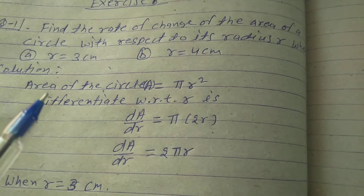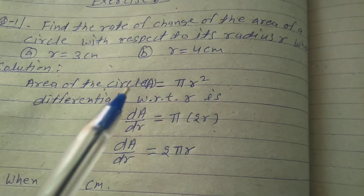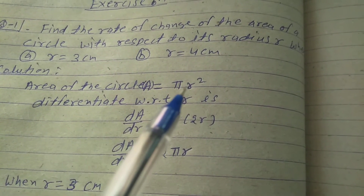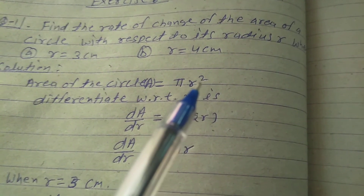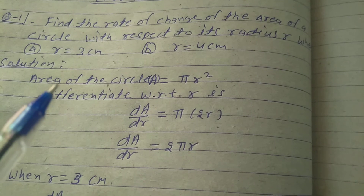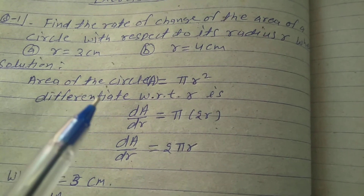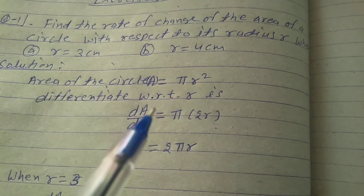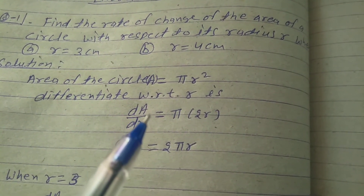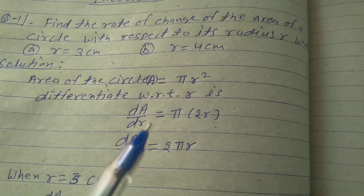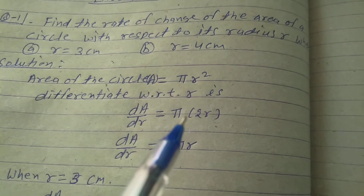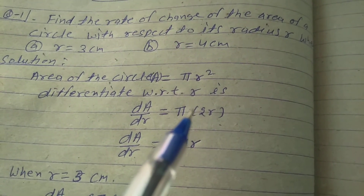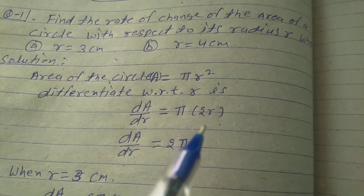Solution start. Area of the circle, A is equal to pi r square. Differentiate with respect to r. So, dA upon dr is equal to pi bracket 2r.